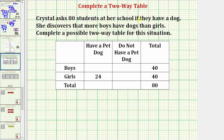Crystal asks 80 students at her school if they have a dog. She discovers that more boys have dogs than girls. Complete a possible two-way table for the situation. From the first row we know she asked 40 boys. From the second row we know she asked 40 girls, and of these 40, 24 have a dog. The last row is for the totals, and we know 80 students were asked if they had a pet dog.